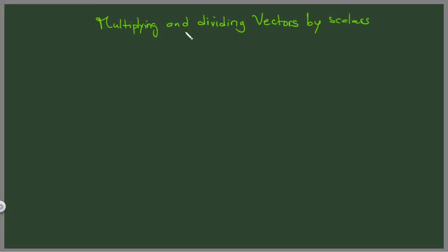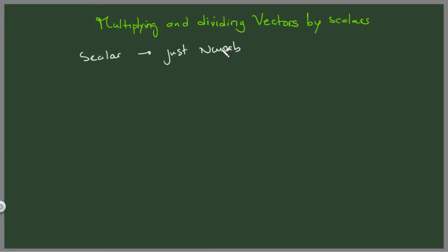Hey, what's up guys, welcome back. In this video we're going to multiply and divide vectors by scalars. Remember we said in the previous video that vectors have direction and magnitude. Magnitude is just a number — it's a scalar. So scalars are just numbers. Just like you have a vector A, you can also have a scalar a that's just a number.